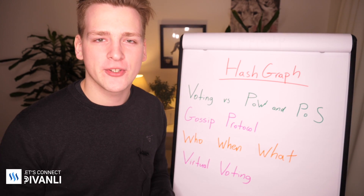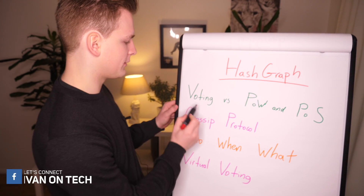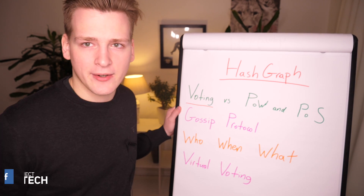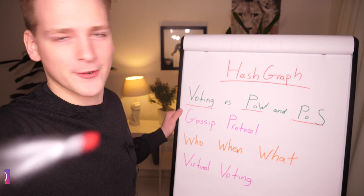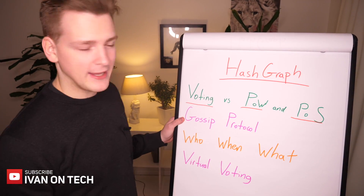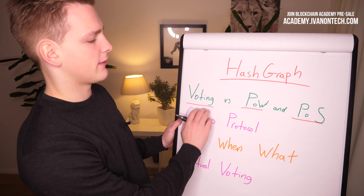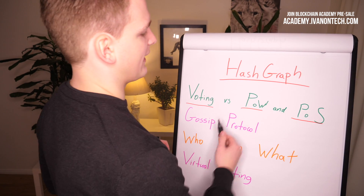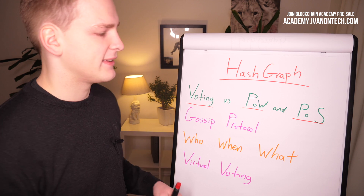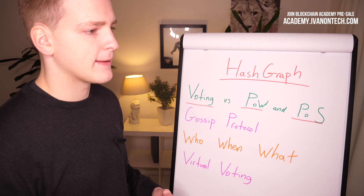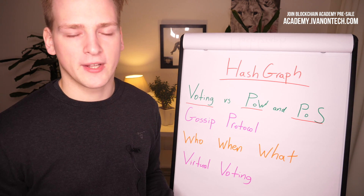Hashgraph is a new way of reaching consensus in a decentralized network. We have to understand the difference between voting algorithms and algorithms such as proof of work and proof of stake, because Hashgraph really wants to be a voting algorithm. In proof of work, miners mine the next block — they spend electricity and computational resources — and the advantage is that it is extremely secure and the computational power securing the network is often enormous.